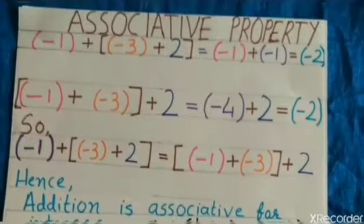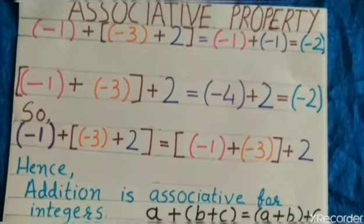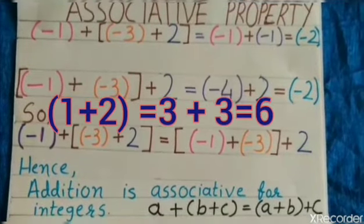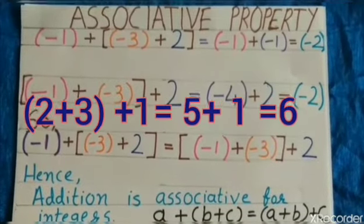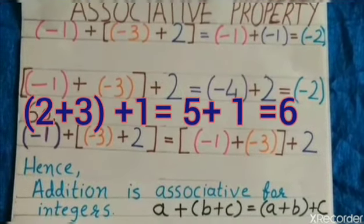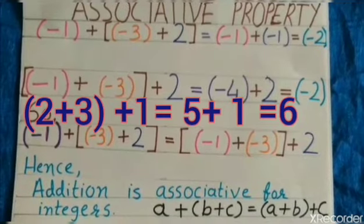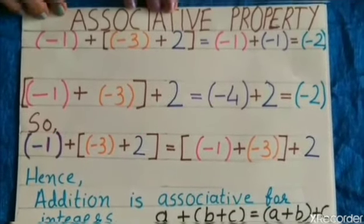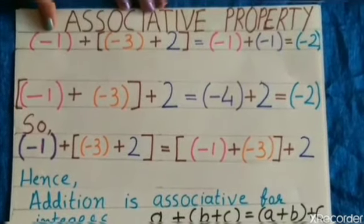Means, either I have to add 1 plus 2 is equal to 3 plus 3 is equal to 6 or 2 plus 3 is equal to 5. 5 plus 1 is 6. Next, we will learn associative property for integers.